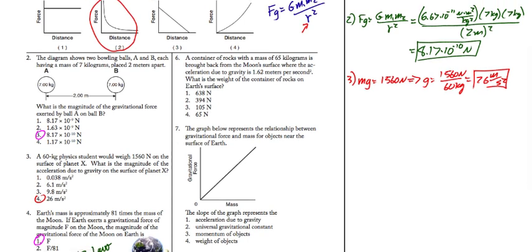Coming back up here for number 6. A container of rocks with a mass of 65 kilograms is brought back from the moon's surface, where the acceleration due to gravity is 1.62 meters per second squared. What is the weight of the container of rocks on Earth's surface? Well, the weight is just going to be m times g, the acceleration due to gravity on Earth. So it's 65 kilograms, the mass of the rocks, times 9.81 meters per second squared, or about 638 newtons. Answer 1.